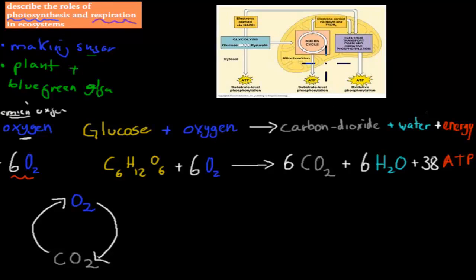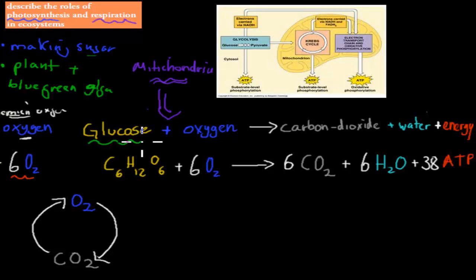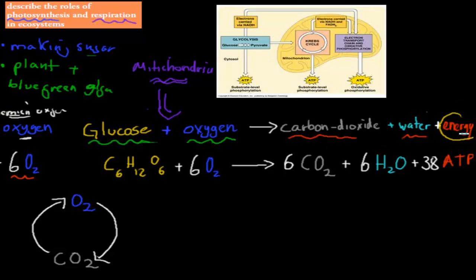The way plants can make energy out of glucose is through the process of respiration. Respiration occurs in something called the mitochondria — especially aerobic respiration. The mitochondria is in cells. In cellular respiration, we've got glucose from photosynthesis and oxygen also from photosynthesis, and we use glucose and oxygen to produce carbon dioxide, water, and energy. So by breaking down glucose with the help of oxygen, we release energy.